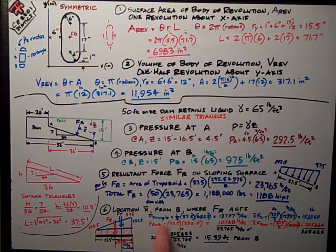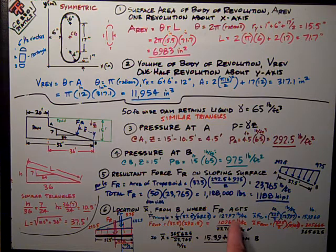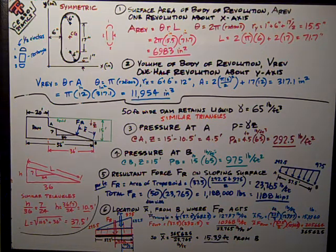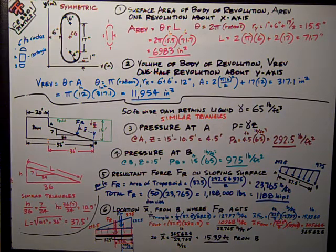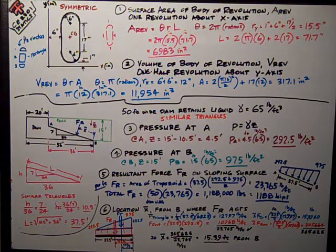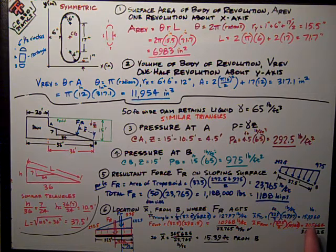So the force of the triangle per foot is one half base times height. Here's the numbers. It acts one third from the big end, and the length of that is 37.5 feet. So 37.5 divided by 3, gives me x̃f, which is this number, 159,960.